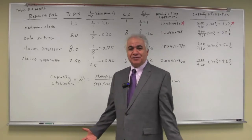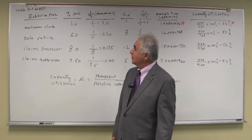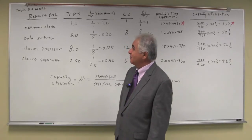Here is an example of flow rate and capacity analysis. This is claims processing in an insurance company.